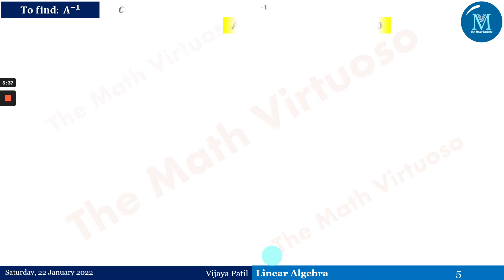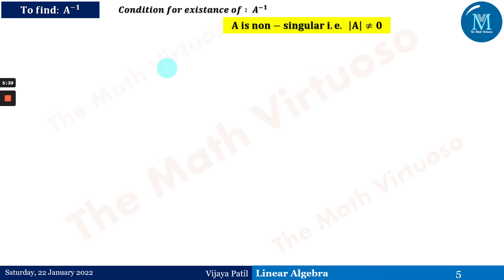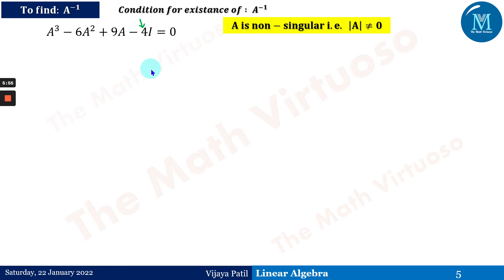Now to find A inverse, the condition for the existence of A inverse is that A must be non-singular, meaning det(A) ≠ 0. We already found det(A) = 4, which is non-zero, so we can proceed to find A inverse in this case.